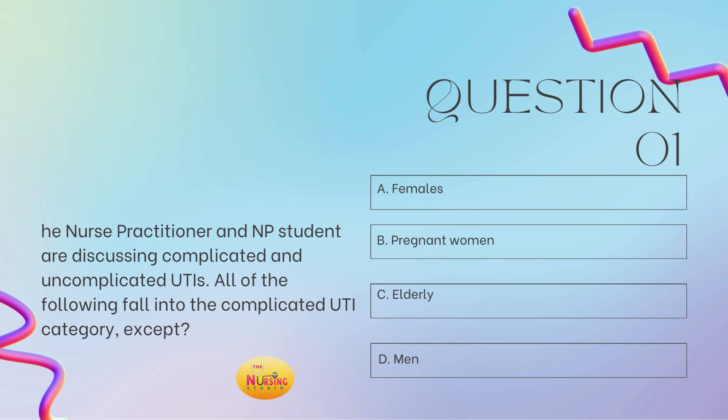With uncomplicated UTIs, that's typically your females who have the typical UTI presentation — like dysuria, frequency — and they haven't had any history or issues with UTIs and haven't been treated on antibiotics recently. For complicated UTIs, think of the scenario, think of the anatomy. Pregnant women are considered complicated, elderly are considered complicated, and males are considered complicated because of anatomy. The complicated categories we treat for seven to ten days; uncomplicated, we treat for three days.